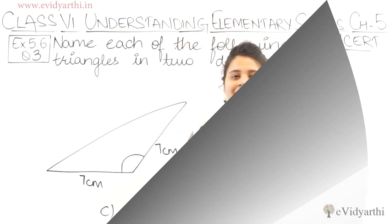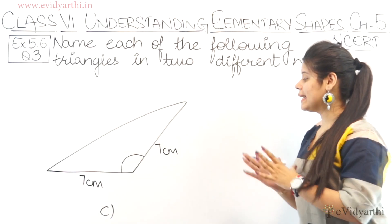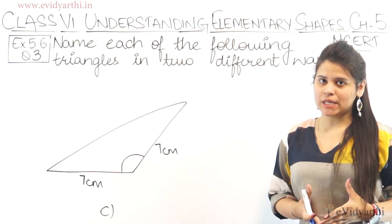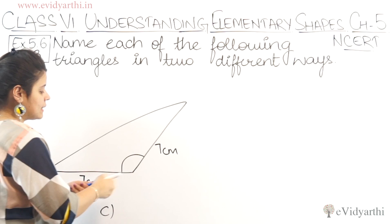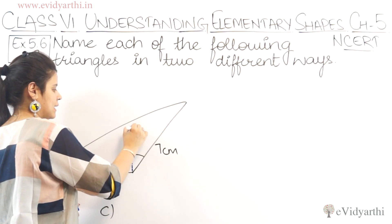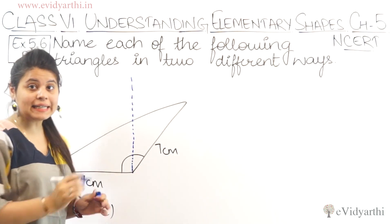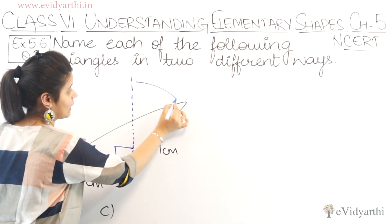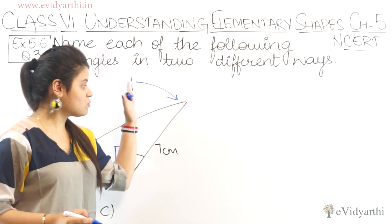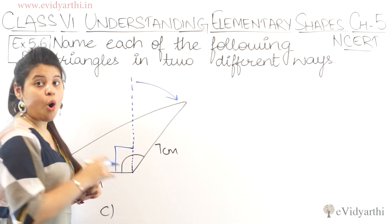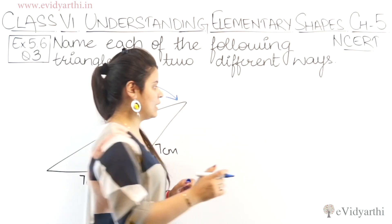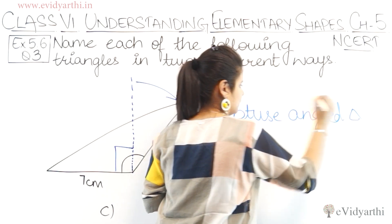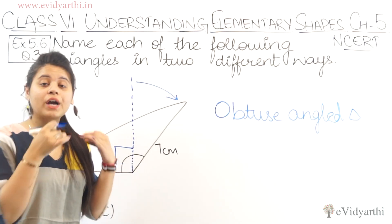Now coming to the next part, Part C. We have this triangle. Looking at the first angle, it is an obtuse angle — greater than 90 degrees. So this triangle has one obtuse angle, which means it will be an obtuse angle triangle.